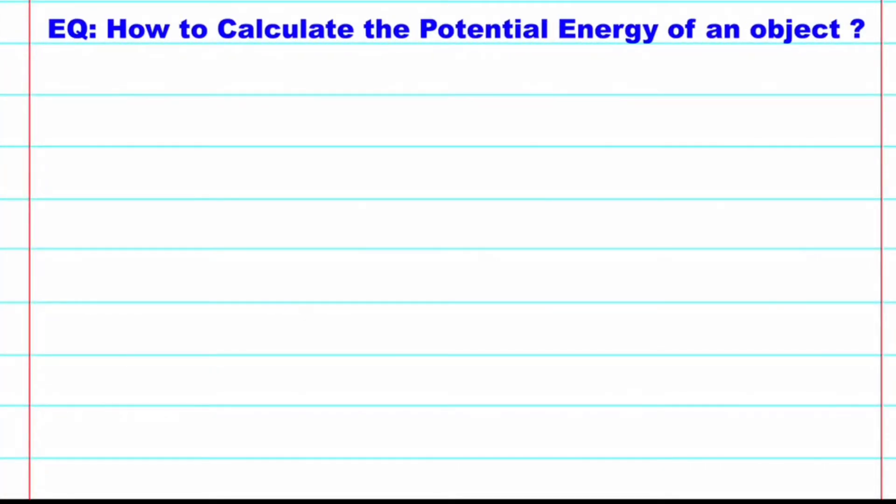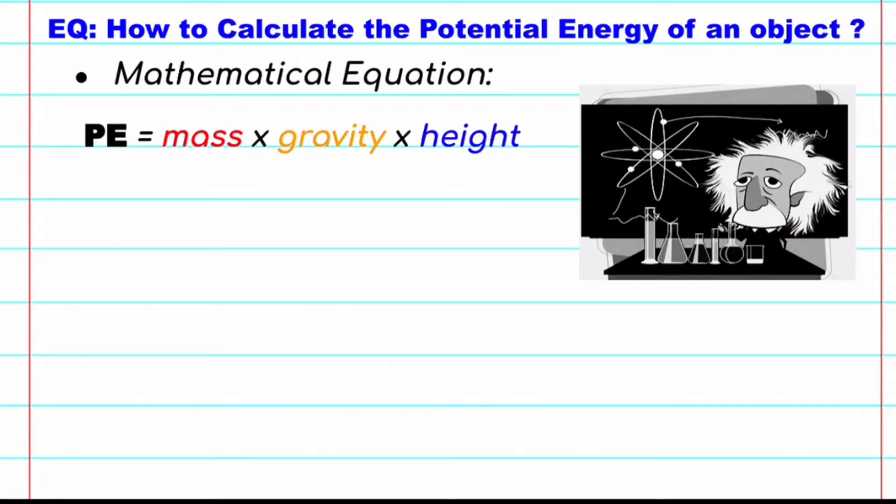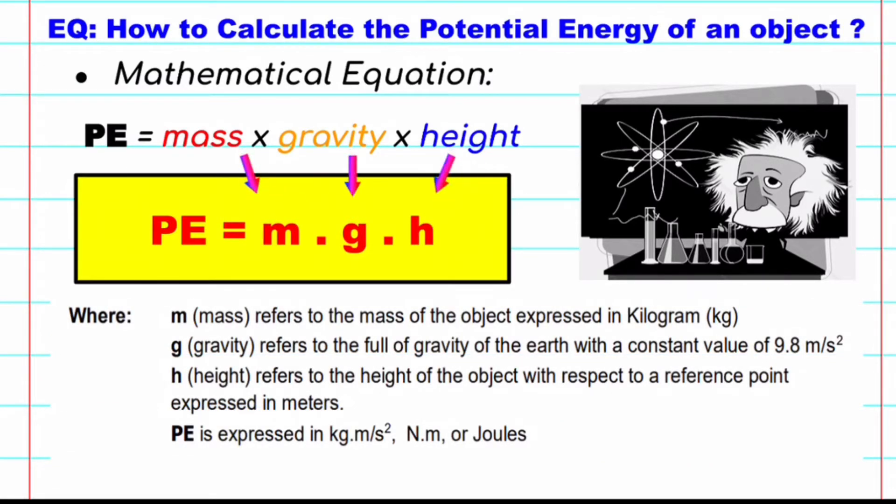And the last essential question: How to calculate the potential energy of an object? As they always say, math is the language of science. So to answer this, let us have this mathematical equation which shows the relationship between mass, gravity, and height. Potential energy is equal to mass times gravity times height. Where M or mass refers to the mass of the object expressed in kilogram. G refers to the gravity of the earth with a constant value of 9.8 meter per second squared. And H refers to the height or distance with respect to a reference point and expressed in meters. Potential energy is expressed in kilogram meter per second squared, Newton meter, or joules.